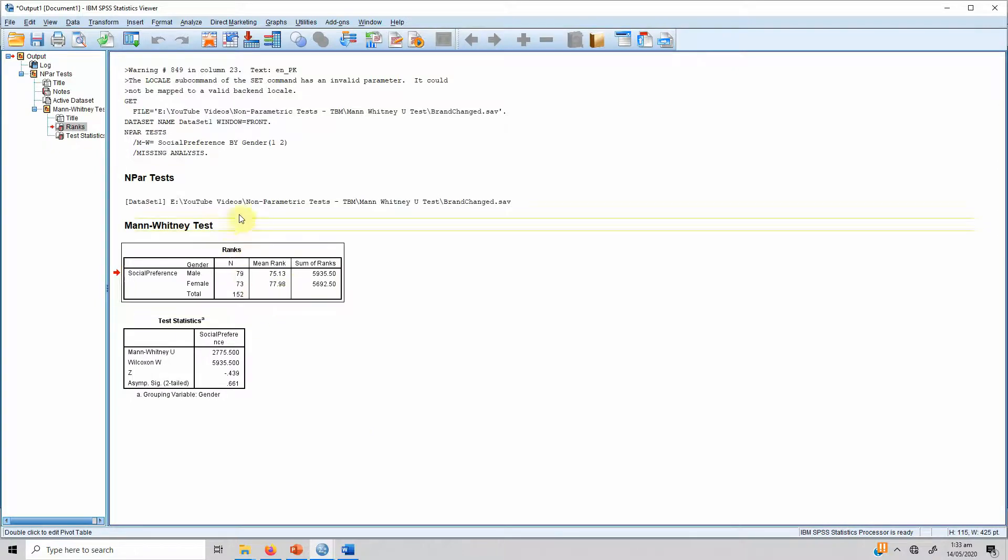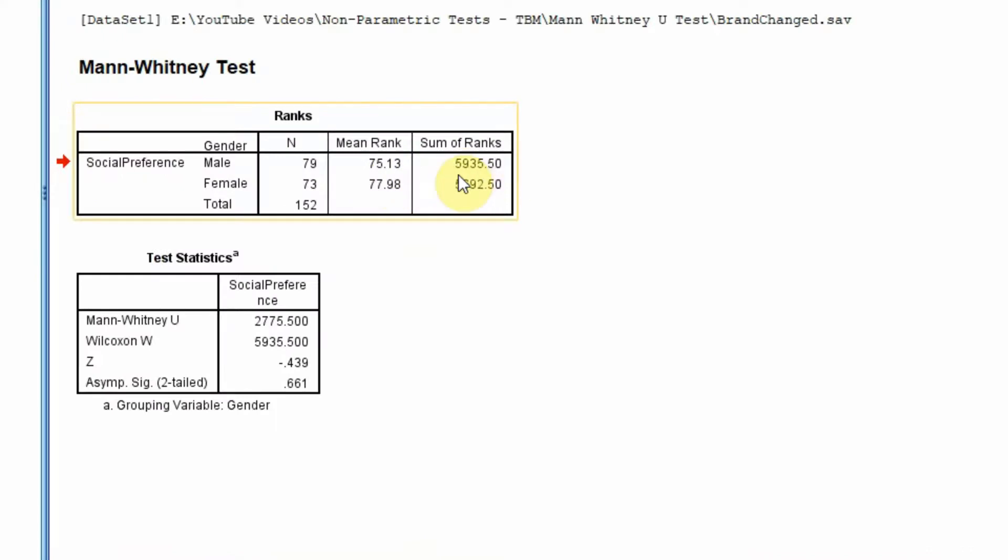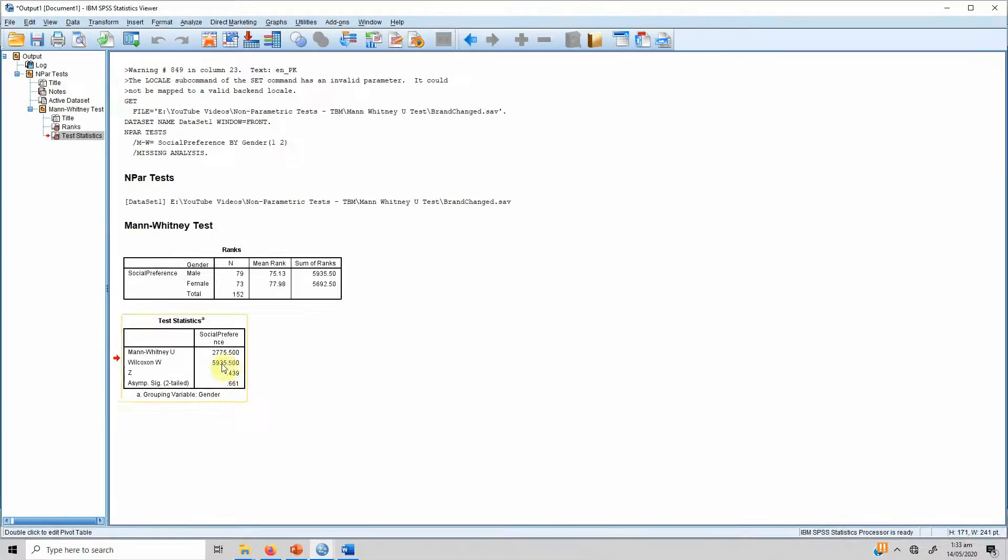Here are our results as mentioned. In this case, you do not look into means. What you look into is ranks based on the median values. This is the mean rank. This is the sum of the ranks. Male, there are 79 males and 73 female respondents. A total of 152 respondents. Is there a significant difference? Well, no. There is no significant difference in social preference between male and female respondents.